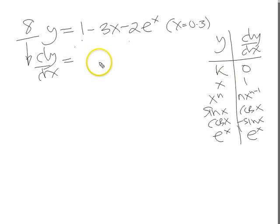The first thing's a constant, so that goes to 0. Minus 3 lots of x, which goes to 1. Minus 2 lots of e to the x, which goes to e to the x. There we go.